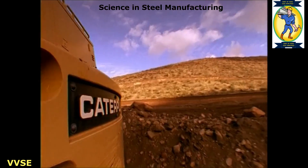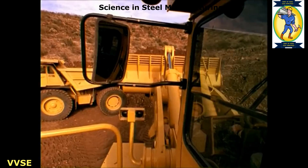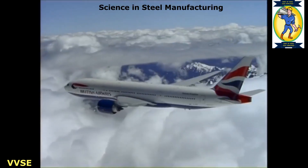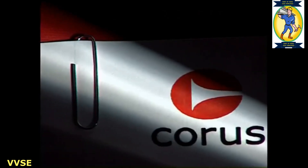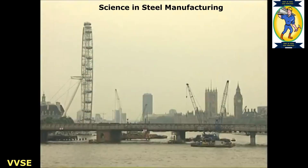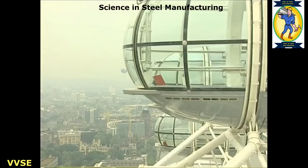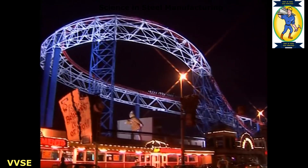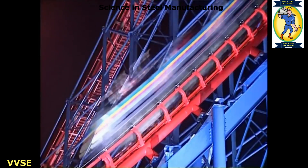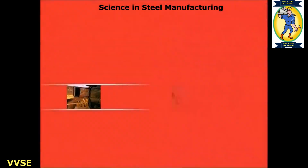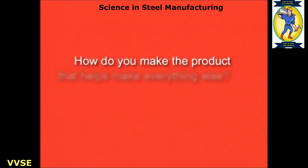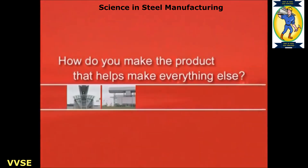Yes, everything. Because even if something isn't made of steel, steel will have been used to make it. From paperclips to pipelines, paper to plastics, nothing in this world can be made, moved or manufactured without steel. So, how do you make the product that helps make everything else?